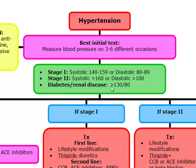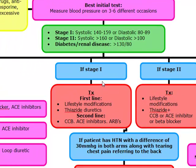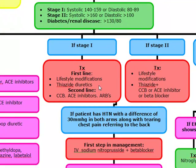Now that we know how to stage and classify primary hypertension — not secondary — we want to manage these patients. In primary hypertension, if they're stage one, the first line is always going to be therapeutic lifestyle changes. That means a low-salt diet of less than two grams a day, weight reduction, and limiting alcohol consumption — less than two alcoholic beverages a day for men and less than one for women.